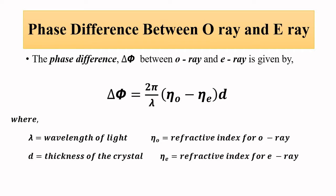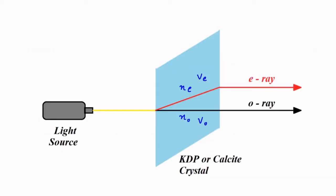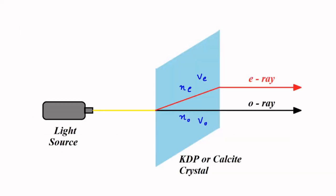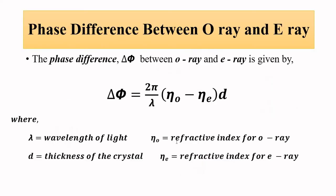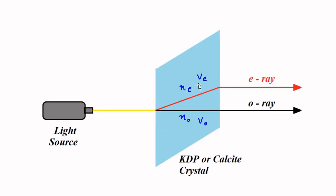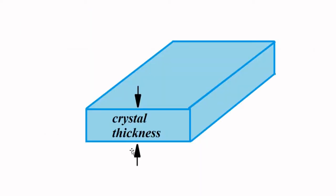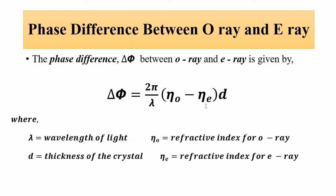Here d is the thickness of the crystal. So this is the total phase difference introduced between the o-ray and the e-ray. The overall phase shift depends on the following factors: first, the wavelength of light from the source; then the two principal refractive indices — η₀ for the ordinary ray and ηₑ for the extraordinary ray; and also the thickness of the crystal d.